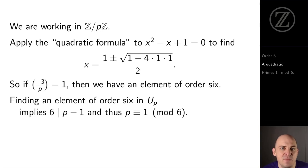On the other hand, if p is not 1 mod 6, then we must not have a square root of minus 3.